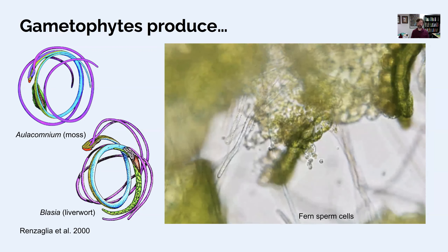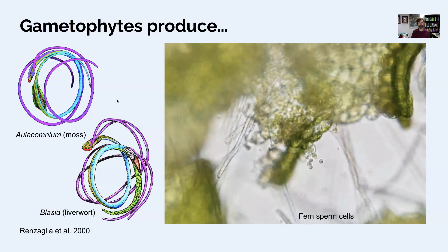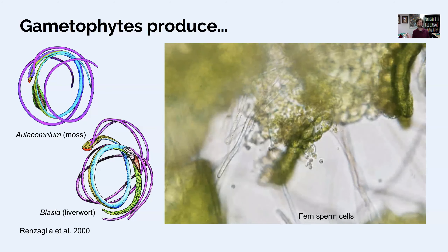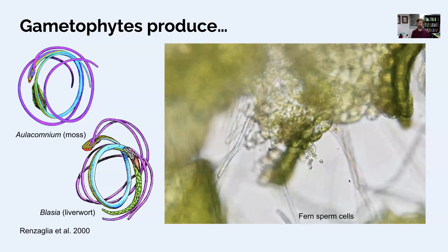Here are images of corkscrew moss sperm and a diagram of sperm cells from different non-vascular land plant types. These are very different from animal sperm — they are an independent evolutionary origin. We still call them sperm cells, but they take on a different appearance. They still have flagella to move with, but use a corkscrew-like motion. In this image you can see them buzzing around heading toward where an egg cell is in a fern gametophyte zone.